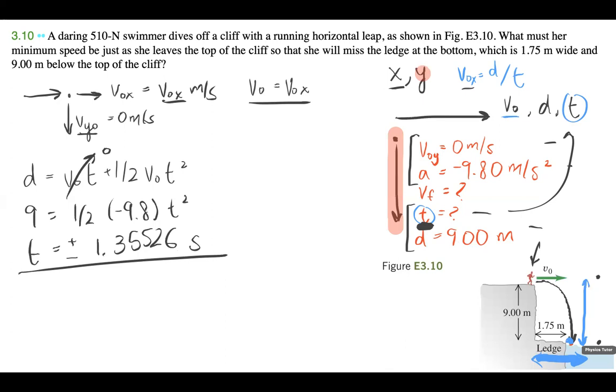Which means that this is the time that she's going to take to cross this ledge. So v-naught x is equal to v-naught is going to be the distance over the time that it takes.